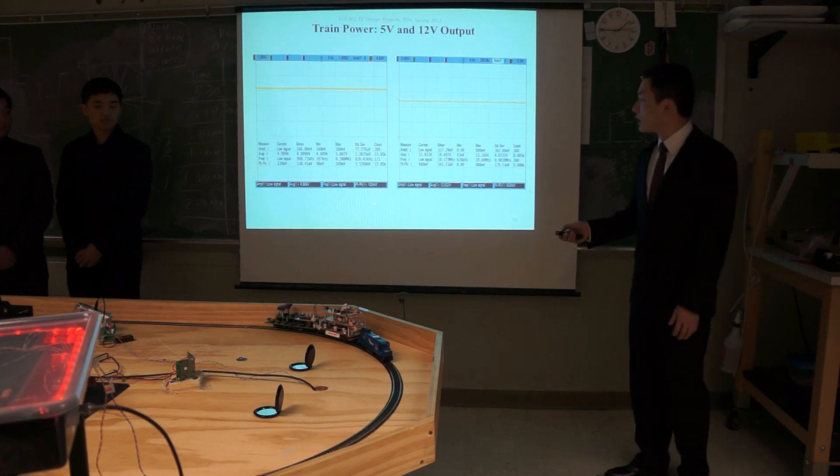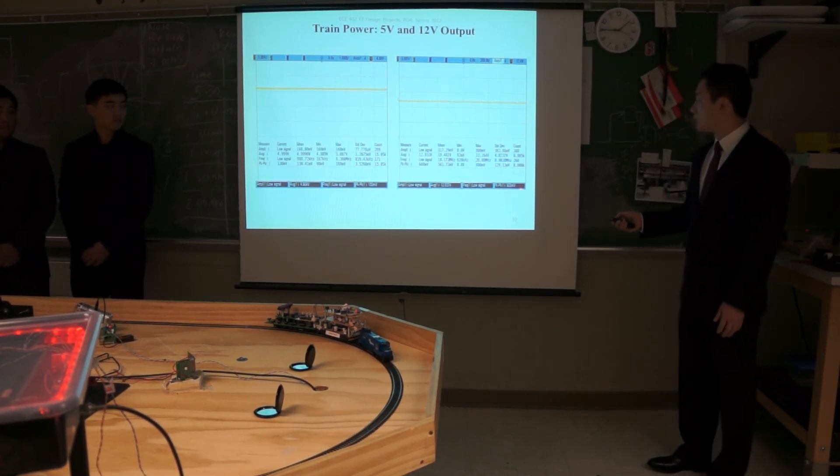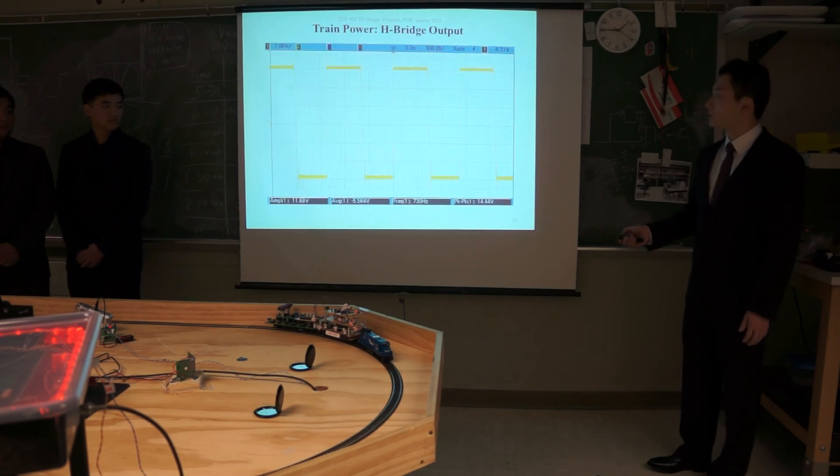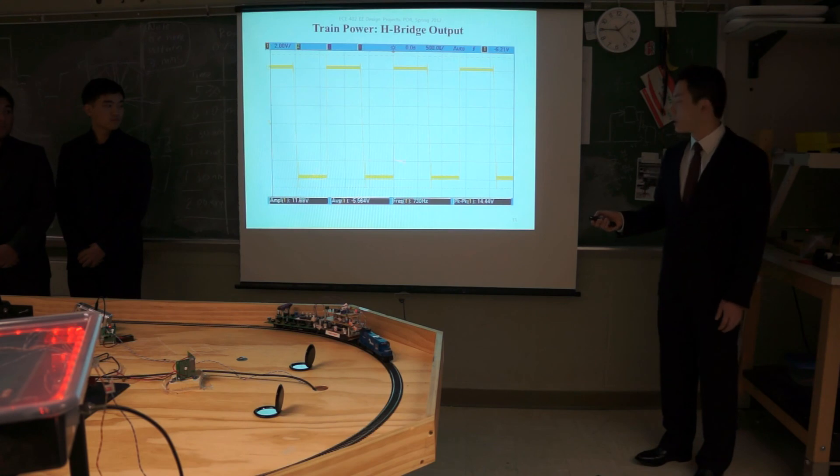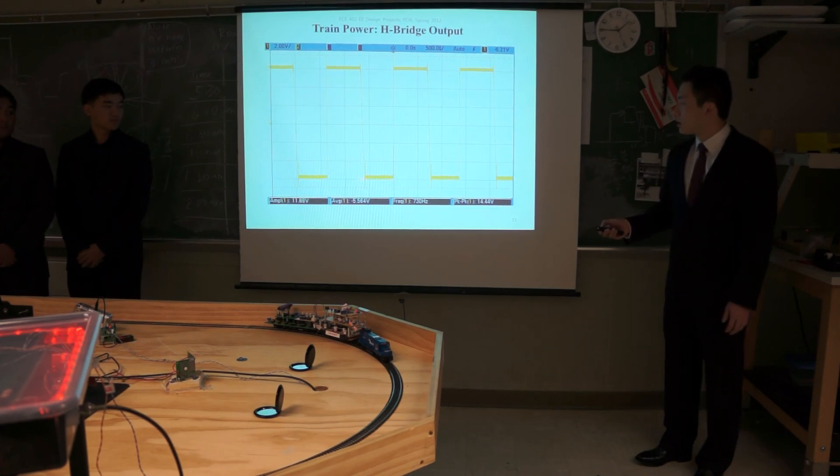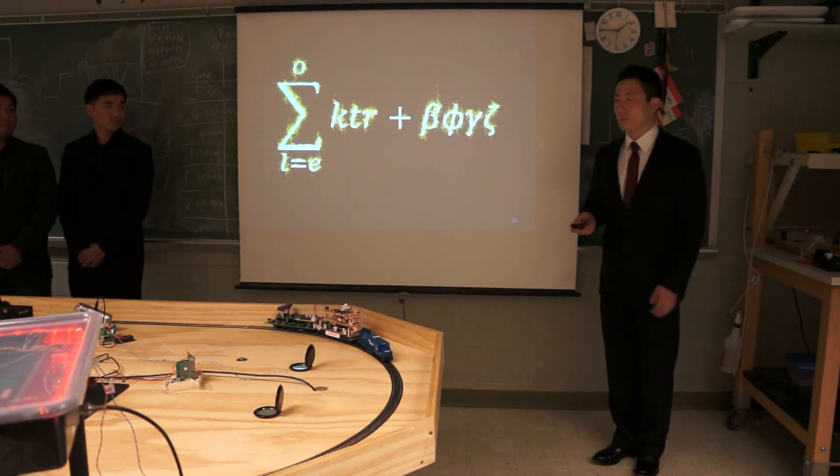This is 5 volts output. I have a peak-to-peak of 130 millivolts and 12 volts has 600 millivolts. And this is a matrix output of 50% duty cycle and amplitude of 11.88. And we are set to start the demo. Thank you.